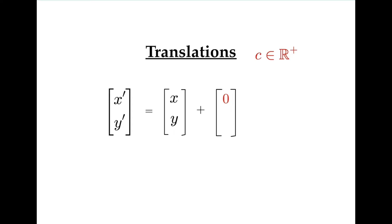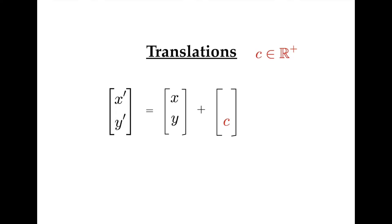If we place c in the y-position, it is added to the y-value and represents a translation of c units up. Minus c represents a translation of c units down, and zero here means there is no vertical translation.